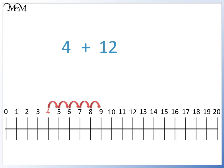But as you can see, there are a lot of jumps to get to 16. It is quicker and more efficient to start with the larger number and add on from that. So we'll start with 12 and add on 4. 12 plus 4 equals 16 and therefore 4 plus 12 equals 16.